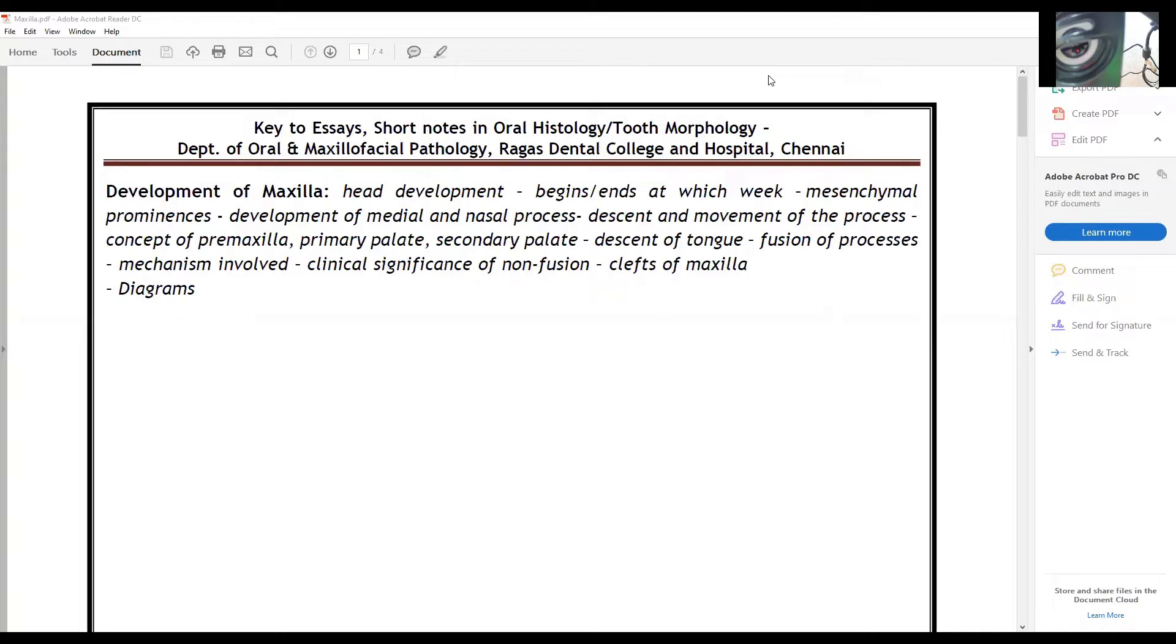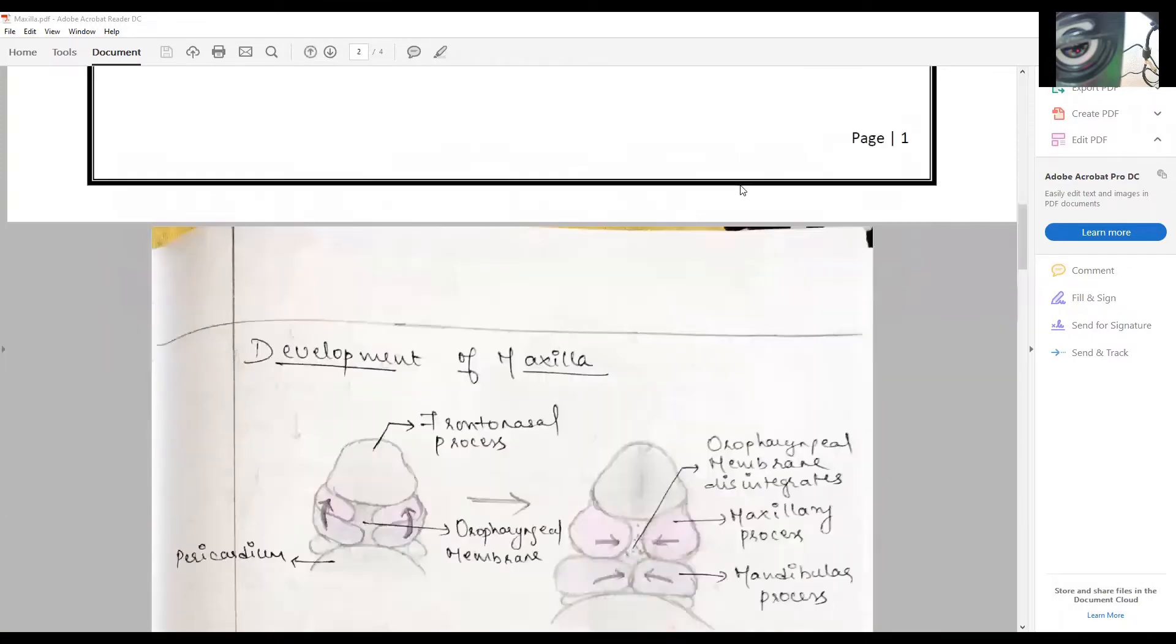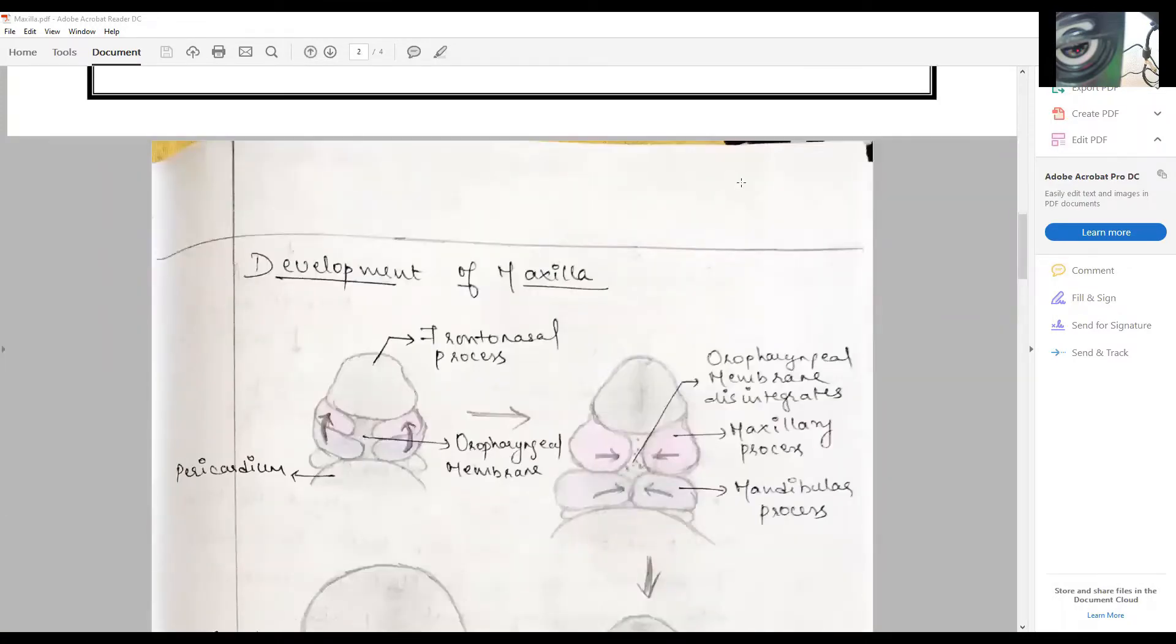The concept of premaxilla, primary palate, secondary palate, the importance of the descent of tongue, fusion of processes, the mechanism involved, the clinical relevance and significance of non-fusions leading to the clefts of maxilla, all with diagrams.